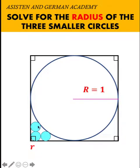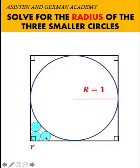The three identical smaller circles are arranged such that the corner circle is tangent to the sides of the square and to the other two circles. The circle at the top is tangent to the side of the square and to the bigger circle, whereas the smaller circle at the bottom is tangent to the side of the square and to the bigger circle at this point of tangency.